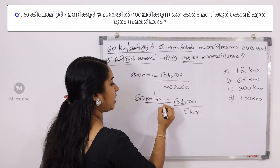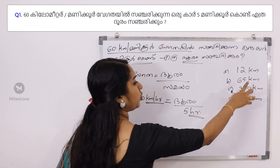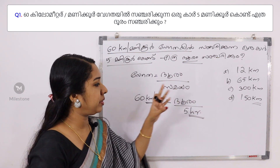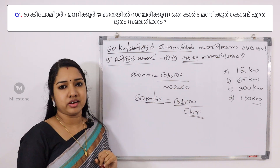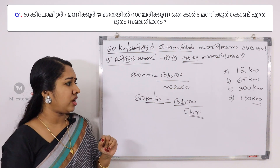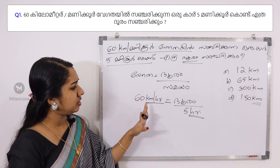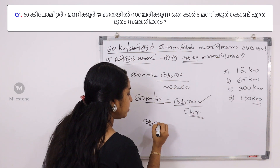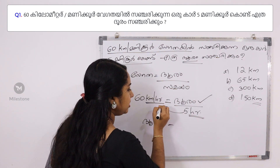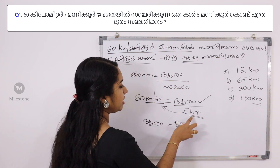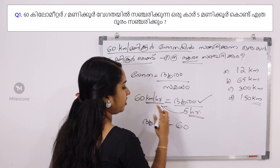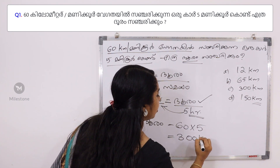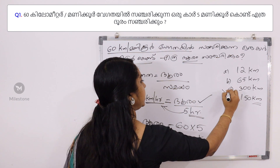Now, if we take kilometers per hour, then we will take the distance in kilometers. You don't need to change units. If you have meters per second, you will need to change units. You must check the units. So, this is already 60 km/hr, multiplied by 5 hours, which is equal to 300 km. The option is C.